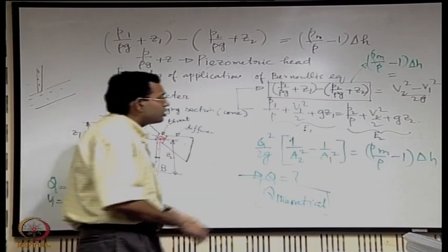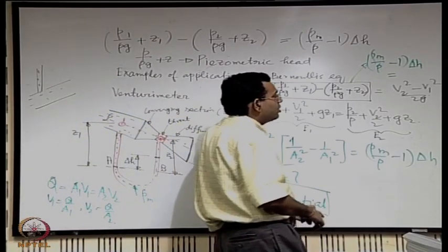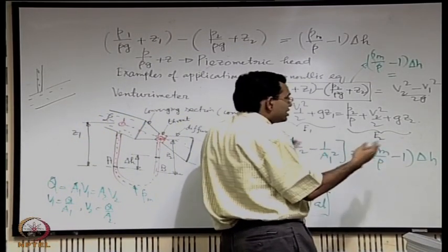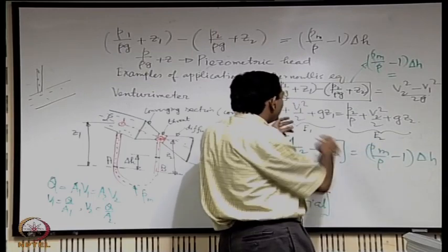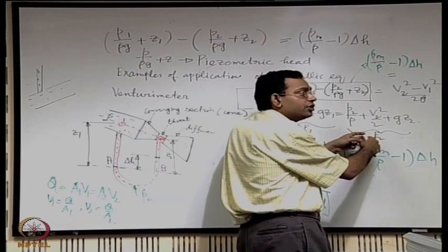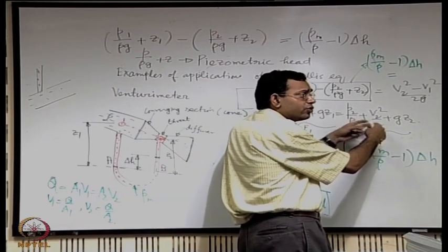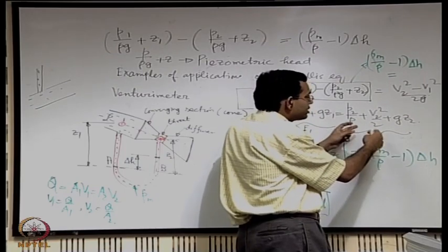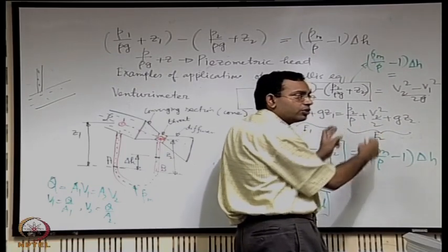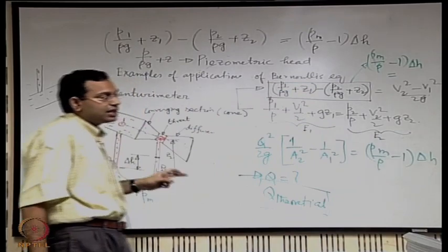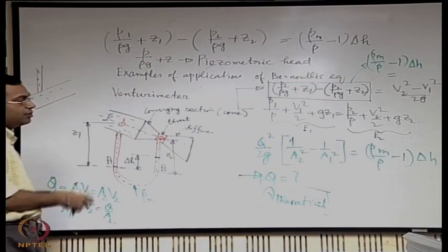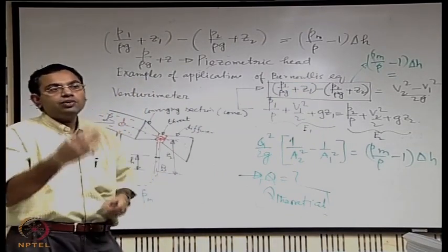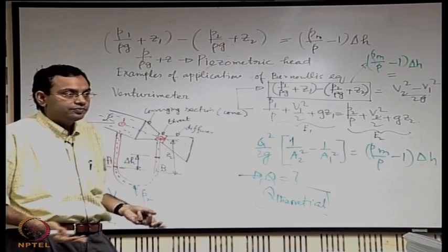These losses give you a guideline about the direction of flow. Say you are given some E1 and some E2. If E2 is greater than E1, you must be assured that flow is taking place from 2 to 1, not from 1 to 2. Flow takes place from a high head to a low head — it cannot be the other way because there is no source for the additional head.